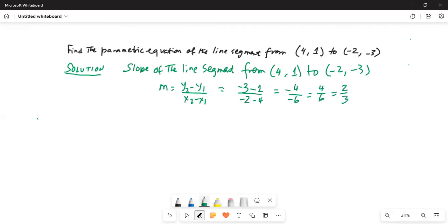Equation of the line segment between (4, 1) and (-2, -3)